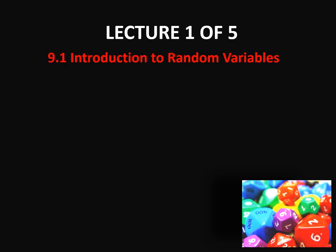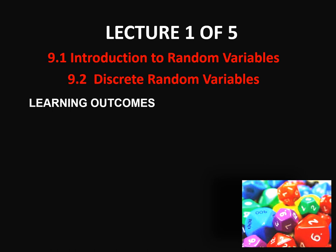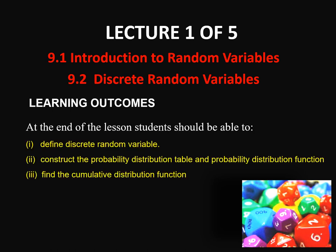Chapter 9: Random Variables for SM025. For this Lecture 1, we will concentrate on subtopic 1, Introduction to Random Variables, and subtopic 2, Discrete Random Variables. For the learning outcomes of Lecture 1, at the end of the lesson, students should be able to define discrete random variable, construct the probability distribution table and probability distribution function, and find the cumulative distribution function.